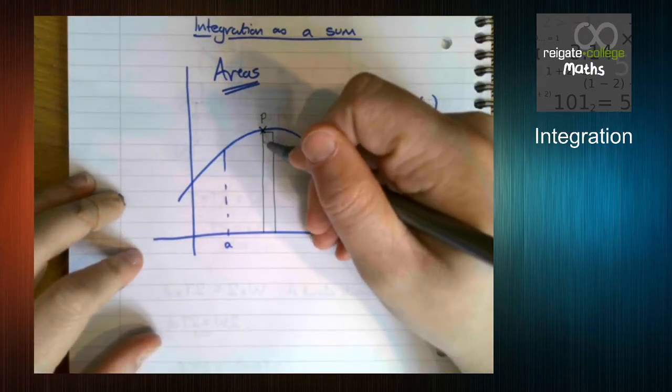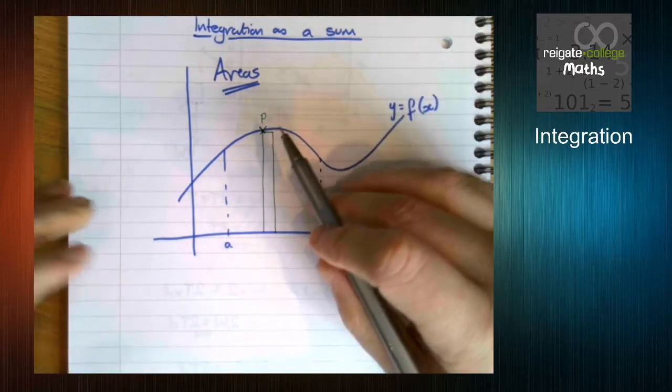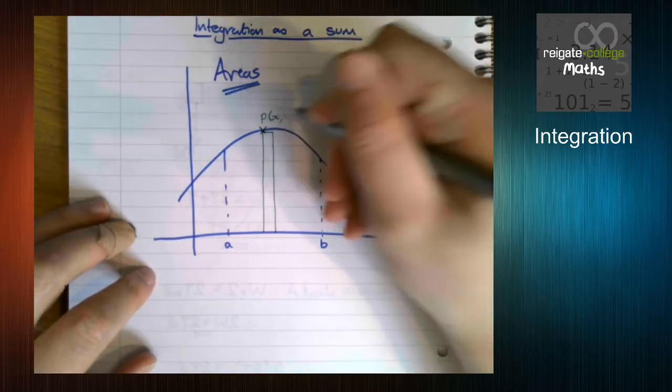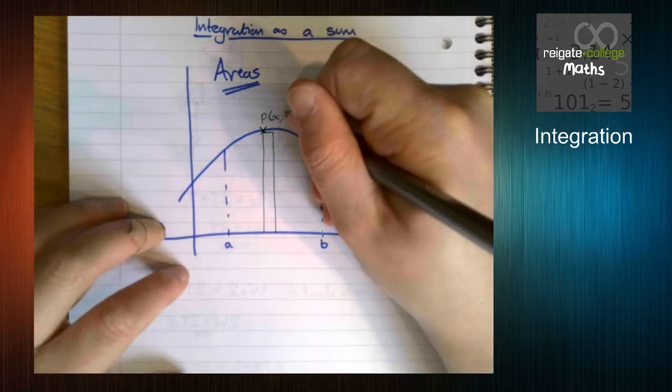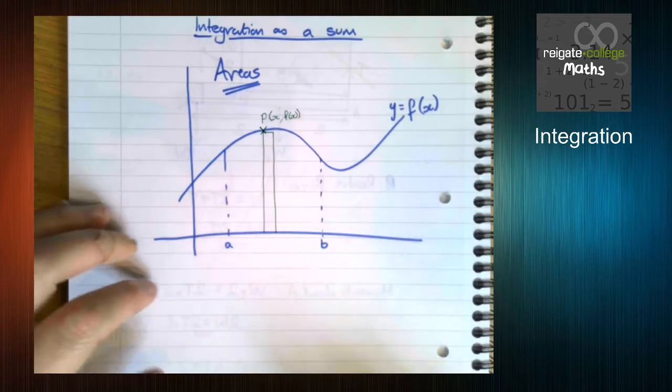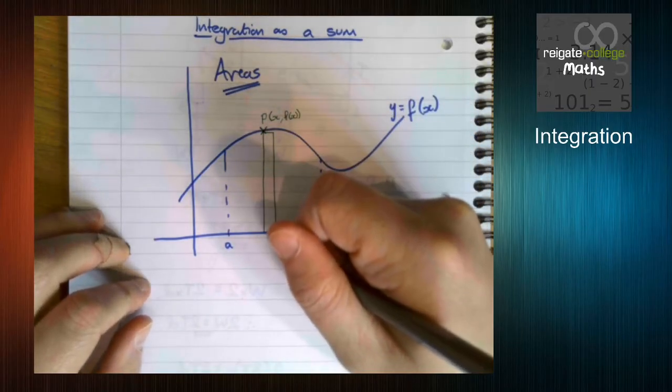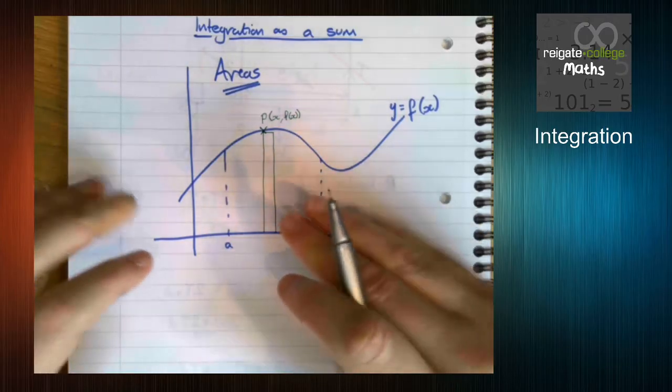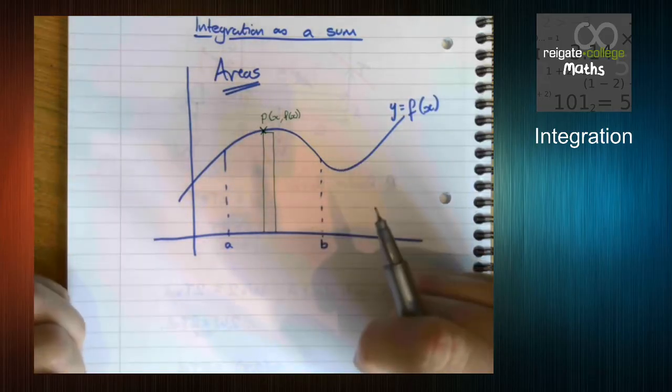So I'm taking this rectangle at the point P. This point P has any coordinates we like, so it has coordinates x, y. But what's the y coordinate? Well y equals f of x. Now so this is x. What we're going to say is this is x a little bit further on. Now this idea of a little bit further on is something we've seen in proof in differentiation from first principles.